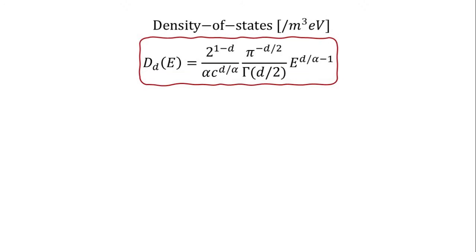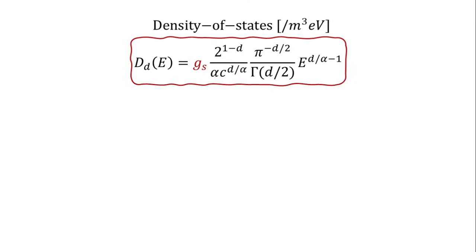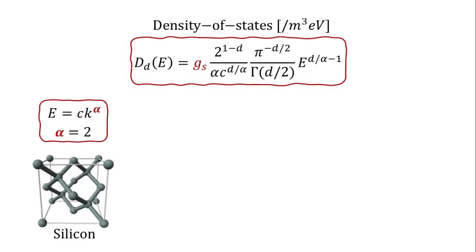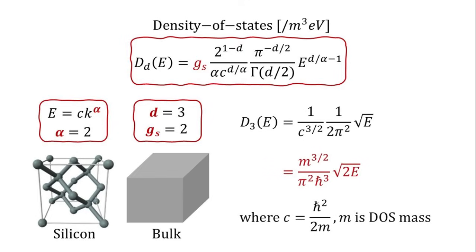Chapter 3: Actual Examples. Let me restate the density of states expression we just derived. In solid-state materials, it's common practice to include a degeneracy factor, denoted here as G-sub-S, to account for spin or valley degeneracies. Let's consider a prototypical semiconductor like silicon, which has a parabolic energy dispersion, meaning alpha equals 2. Consider the 3D bulk and a degeneracy factor G equal to 2. We find that the density of states scales as the square root of energy E, consistent with what you would find in many solid-state physics textbooks. Here, c is related to the electron density of states mass m as shown.